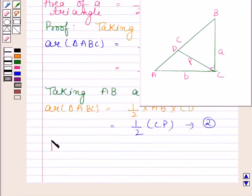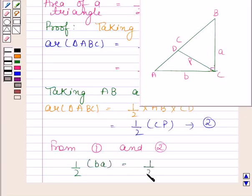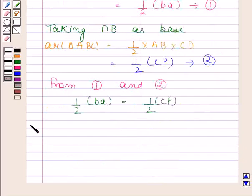Now from equations 1 and 2 we get half of BA equals half of CP. This implies BA is equal to CP, or we can say that AB is equal to PC. Hence we have proved that AB is equal to PC.